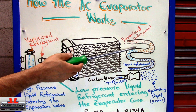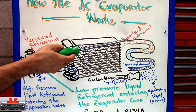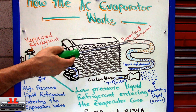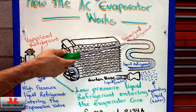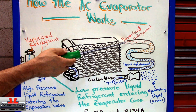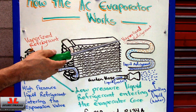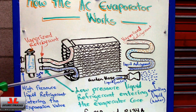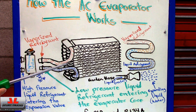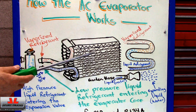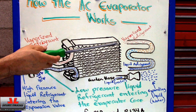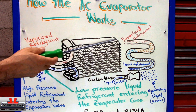I'll show you what the boiling point is in a second. Even though the lines and the evaporator are going to feel cold to the touch, that refrigerant is actually boiling, because it has a very low boiling point. Now that you understand this, I'm going to show you the boiling point of the refrigerant so you understand how it's actually boiling even though it's so cold to the touch.